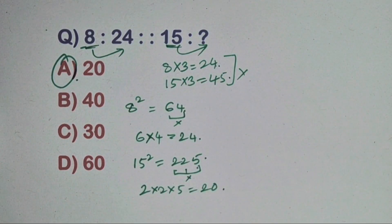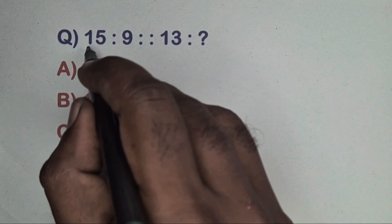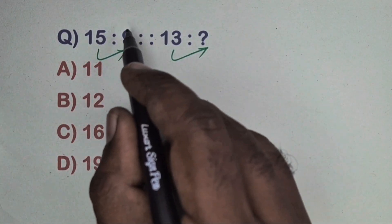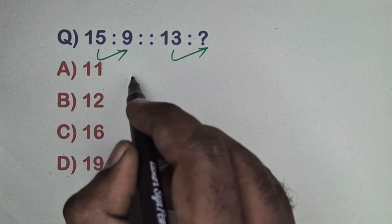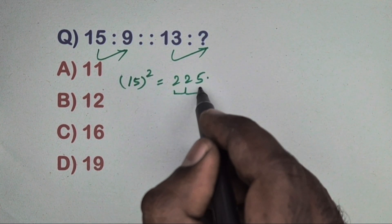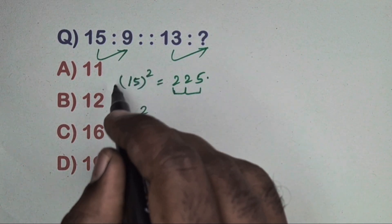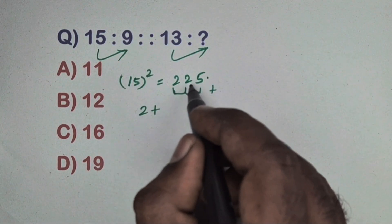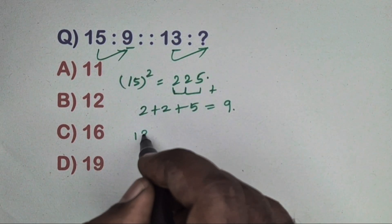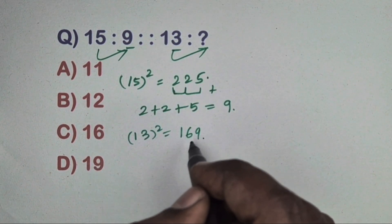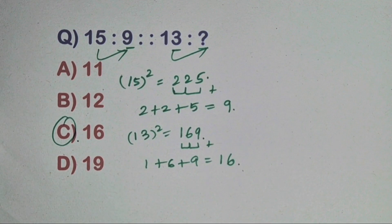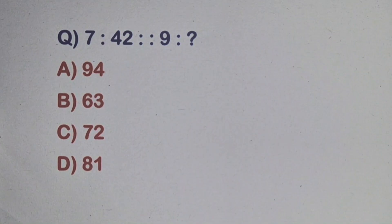Next question: 15 is related to 9 and 13 is related to which number? Take 15 — 15 squared equals 225. Add the digits: 2 plus 2 plus 5 equals 9. This is the combination of square and digit-addition method. Same way take 13 — 13 squared equals 169. Add the digits: 1 plus 6 plus 9 equals 16. Option C is the correct answer.